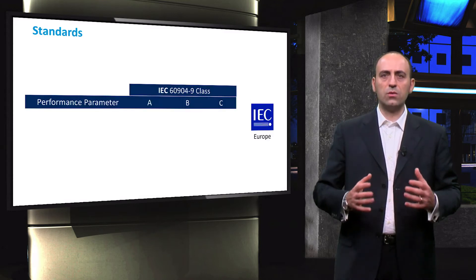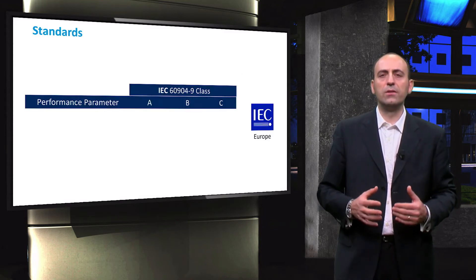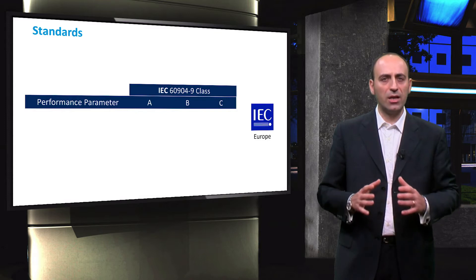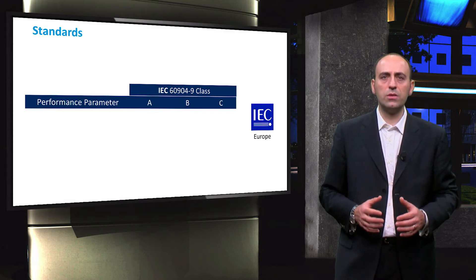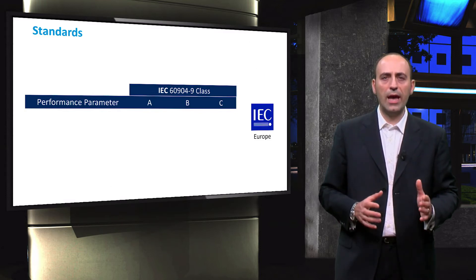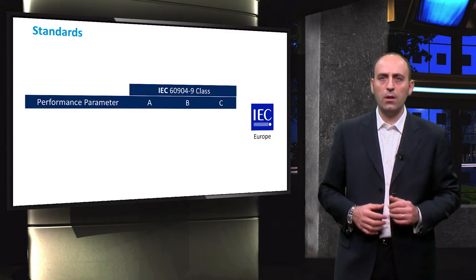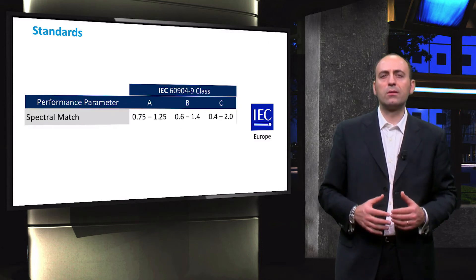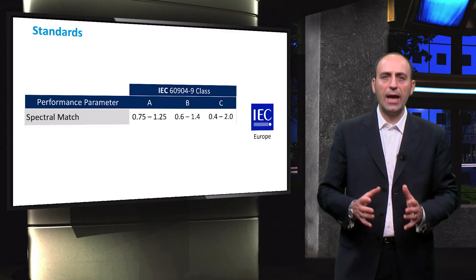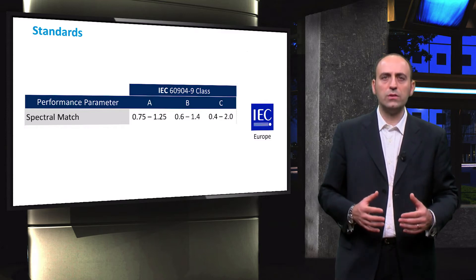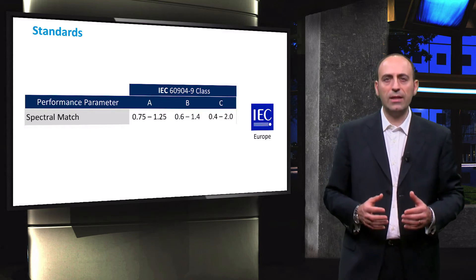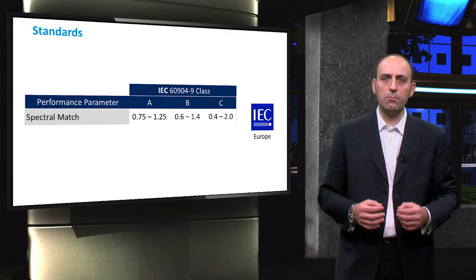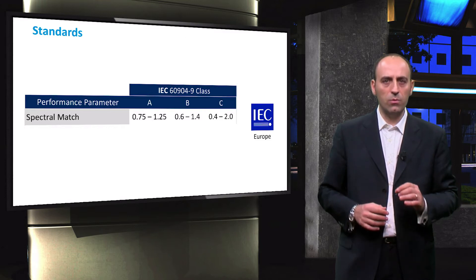The goal of a solar simulator is to replicate the natural sunlight spectrum as accurately as possible. For this reason, the European International Standard uses three performance parameters and each can score A, B or C. The first one deals with the spectral match between the light source and the AM1.5G. The higher the score, the narrower the error margin allowed, and in the following slides we will define in more detail each category with some examples.